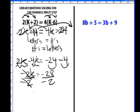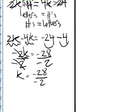The 2's cancel each other out. k equals negative 28 over negative 2. Now we've got two negatives. When you have two negatives, they become a positive.